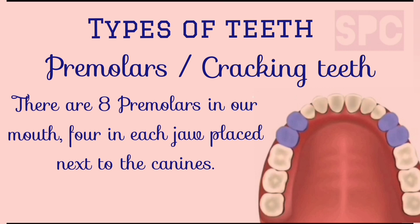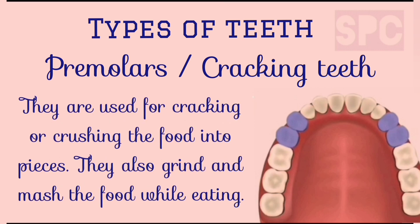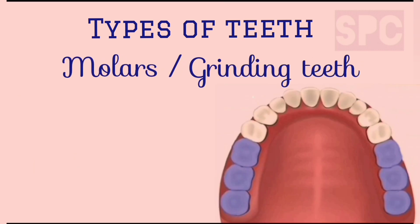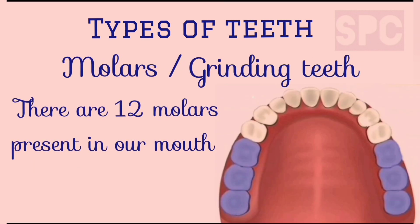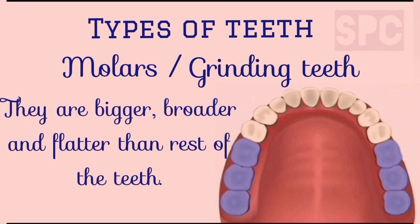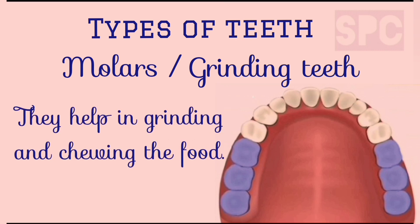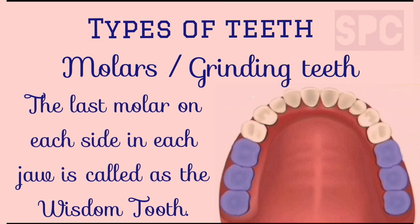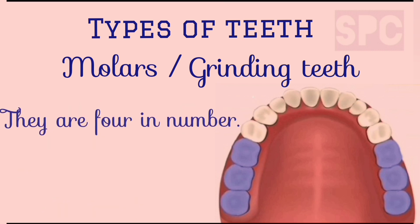Third are premolars, or cracking teeth. There are eight premolars in our mouth — four in each jaw, placed next to the canines. Premolars are used for cracking and crushing the food into pieces. Fourth are molars, or grinding teeth. There are 12 molars in our mouth — six in each jaw. They are bigger, broader, and flatter than the rest of the teeth and help in grinding and chewing the food.